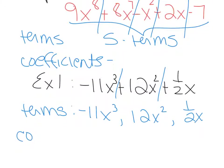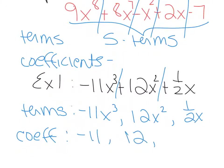The coefficients are the numbers at the front of each term. The coefficient of the first term is negative 11, the coefficient of the second term is 12, and the coefficient of the third term is 1 half.